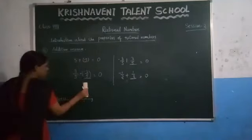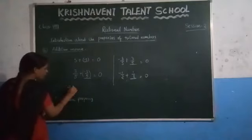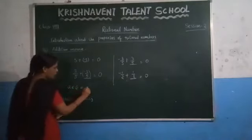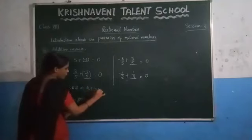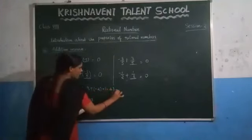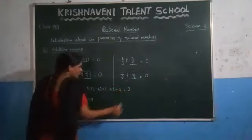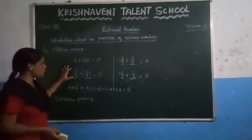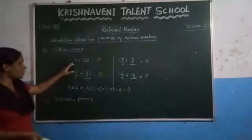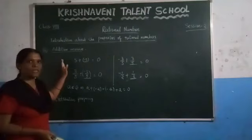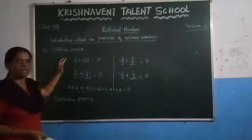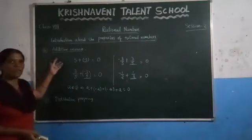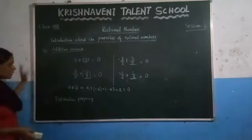How do you define this property? Consider a rational number A. What this property says: a plus (minus a) must be equal to (minus a) plus a, which equals 0. This property we call the additive inverse. In the examination, they will ask what is the additive inverse of 5 — you say minus 5. If they ask what is the additive inverse of 1 by 9, the answer is minus 1 by 9.